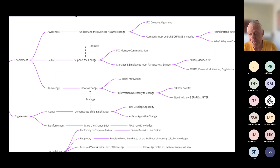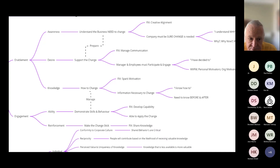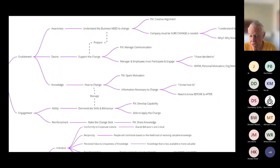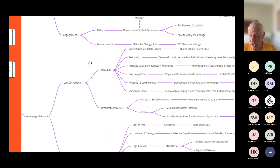So this is the next step — giving people the information necessary to change, so they can say, 'I know how to.' We can go through like we're doing now in the DMMA, going through all these different areas. And then we're going into this ability, skills and behavior, this type of area, reinforcement. And then what we've got is the knowledge inhibitor. We could have individuals not conforming to the corporate culture, not believing that they need to do it. Then there's this situation of the ability to exchange knowledge in communities and a desire to get more knowledge.